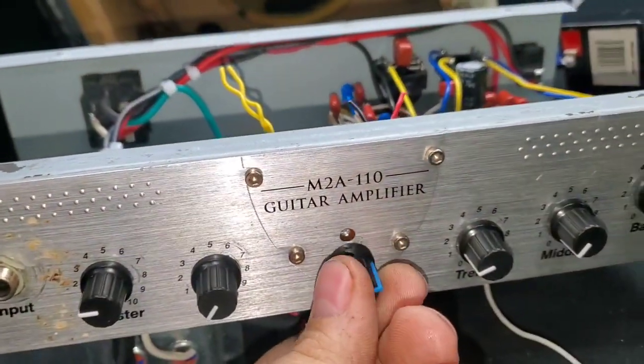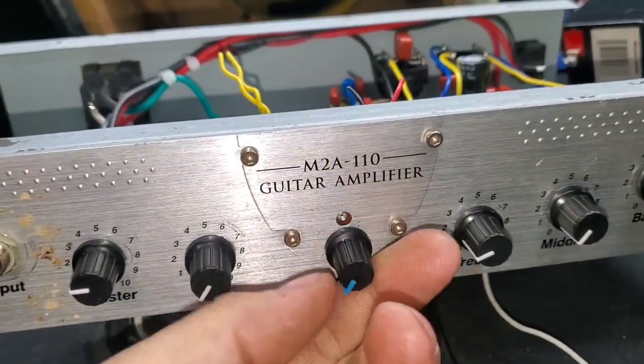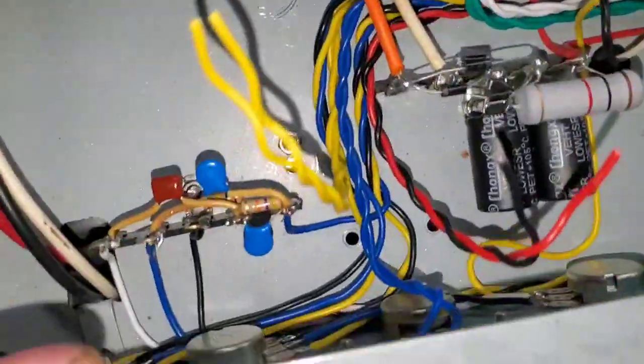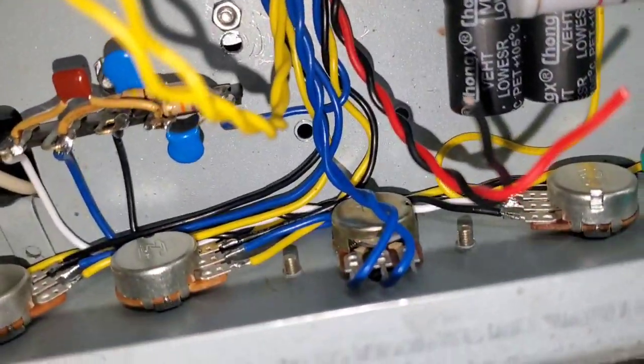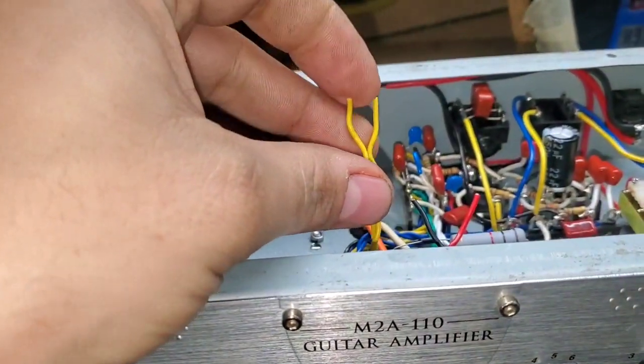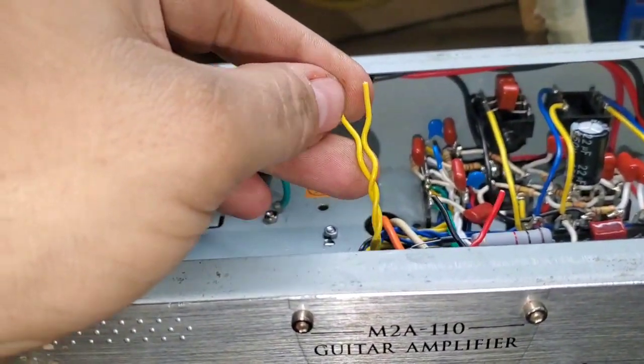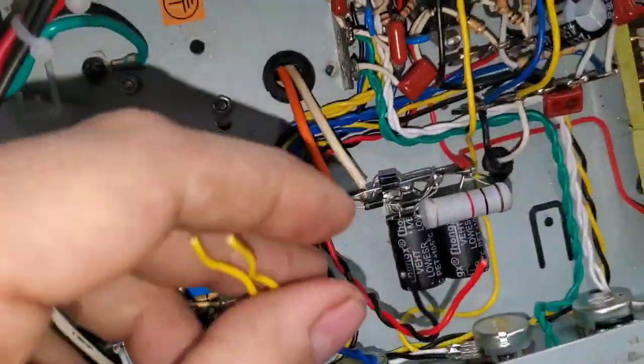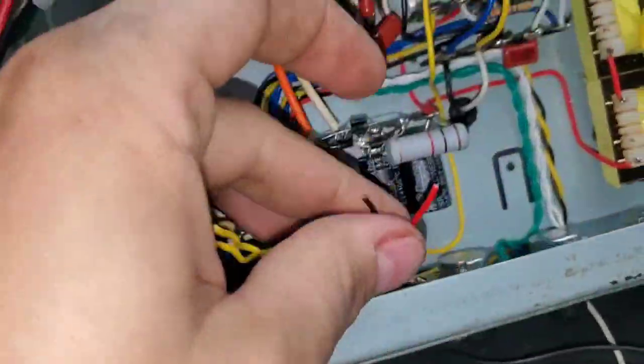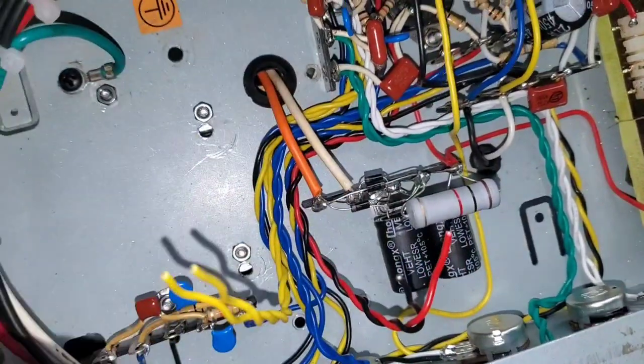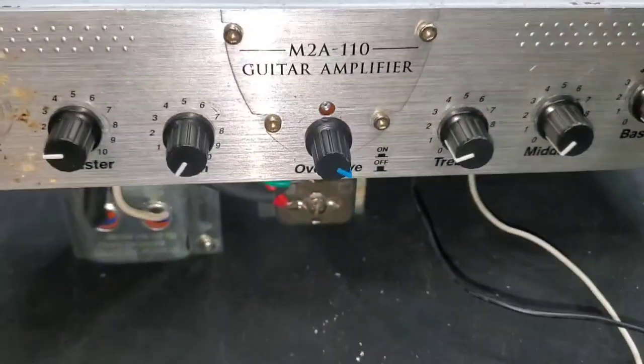So I've put this dial in the center. It's a 250k pot and it's right across the first overdrive control where I was thinking about putting a switch. Now it has variable overdrive control, and there's still a switch for overdrive too, the power amp overdrive, which isn't as effective. It's going to go to a toggle switch. And then this red and black wire here are 24 volts AC power for indicator lights whenever we decide what we're doing about that.